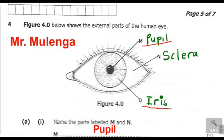When we move to a place where there is dim light, meaning we have gone to a place where there is low light intensity, what happens to the pupil and what happens to the iris? What will happen is that when we move to a room where there is low light intensity or dim light, the pupil becomes bigger — meaning that the pupil dilates — in order to allow more light to pass through.